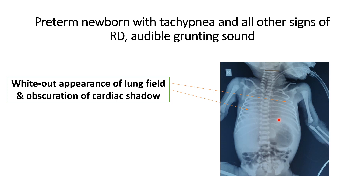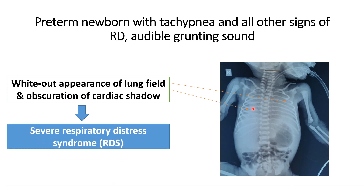Indirectly, whenever there is any intrathoracic lesion — or any lesion in the lung field or mediastinum which touches the border of the heart, aorta, or even the diaphragm — that border is obliterated; you are not able to differentiate between the border and the lesion, and the terminology we use for this is the silhouette sign. The diagnosis for this x-ray is white-out appearance of the lung field and obscuration of the cardiac border, characteristically seen in a case of severe respiratory distress syndrome in a preterm newborn.